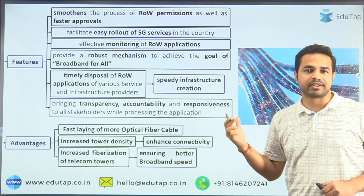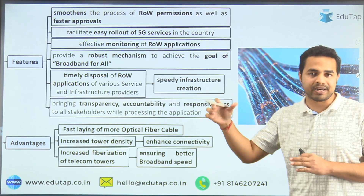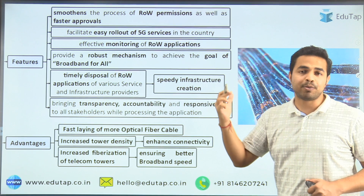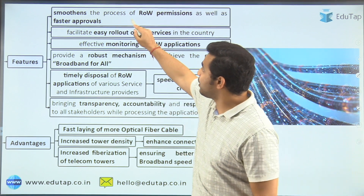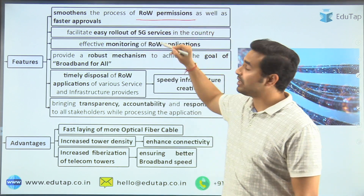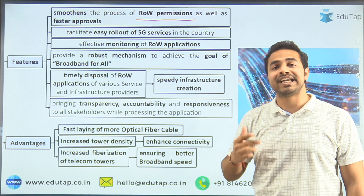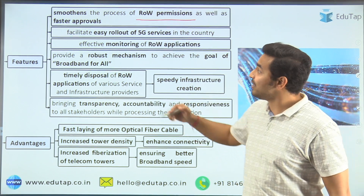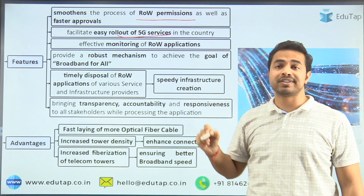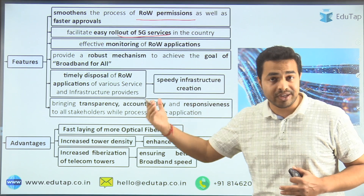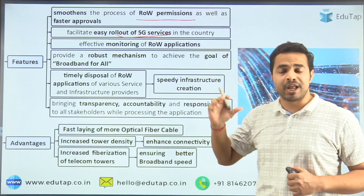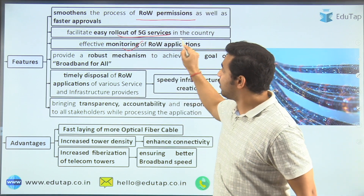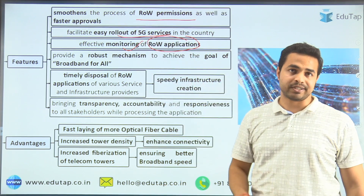When we talk about the features — what exactly is going to happen after the launch of this portal — it is going to smoothen the process of right of way permissions as well as lead to faster approvals. It will facilitate easy rollout of 5G services with the laying and erection of mobile towers. Apart from that, it will also help in effectively monitoring right of way applications.